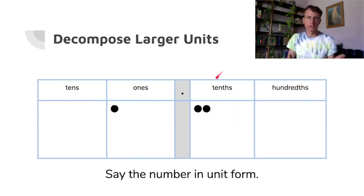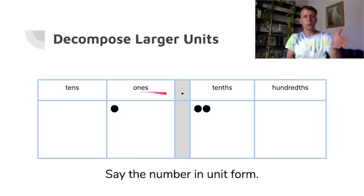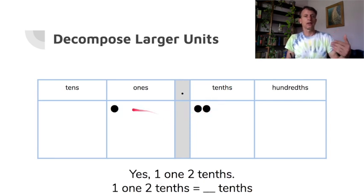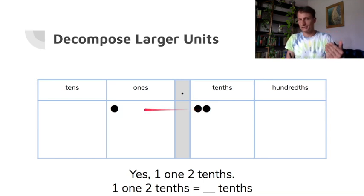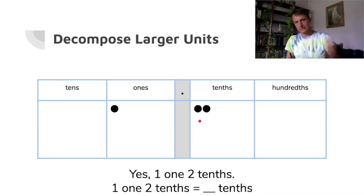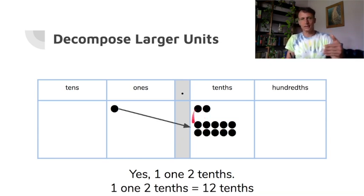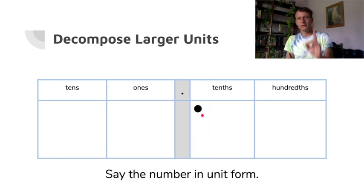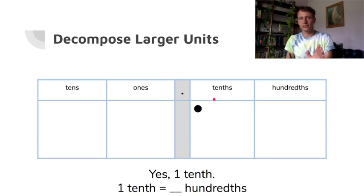Now say this number in unit form: one one and two tenths. How many tenths is that all together? We take this one one and convert it to ten tenths, so the grand total is twelve tenths.